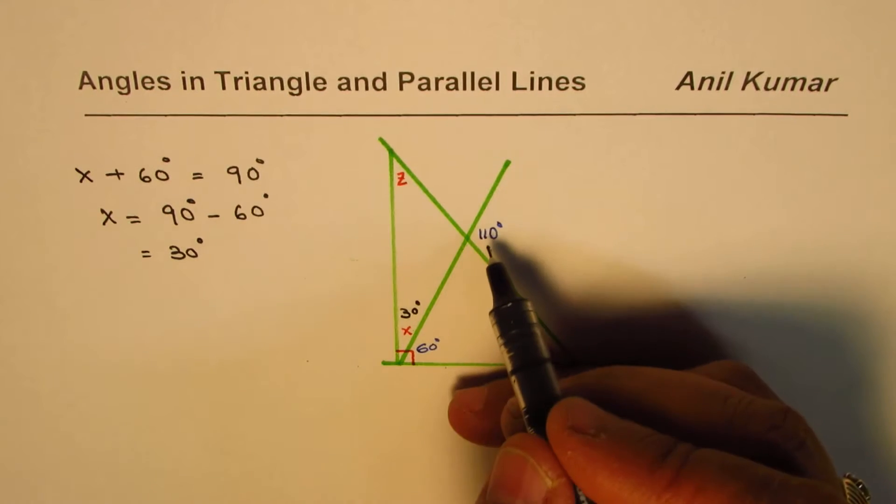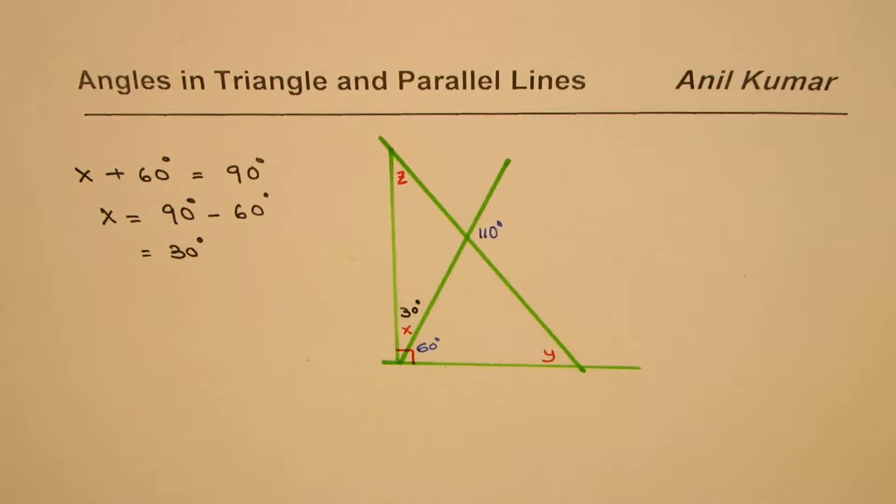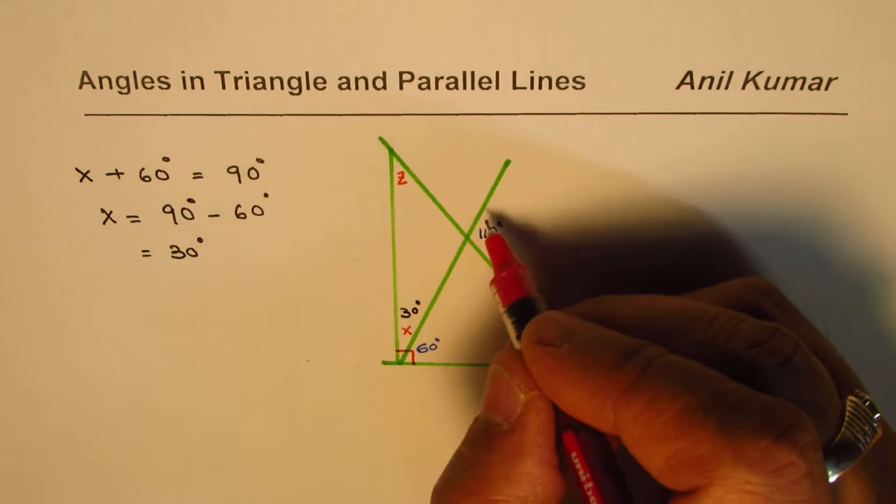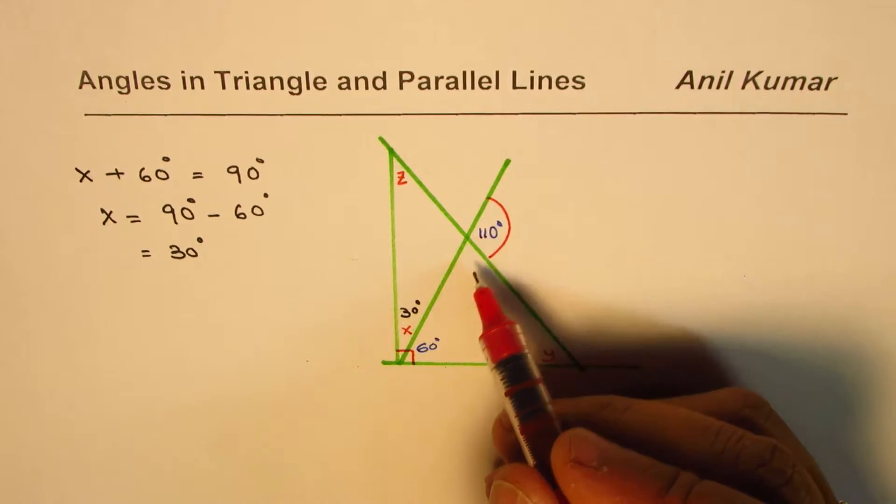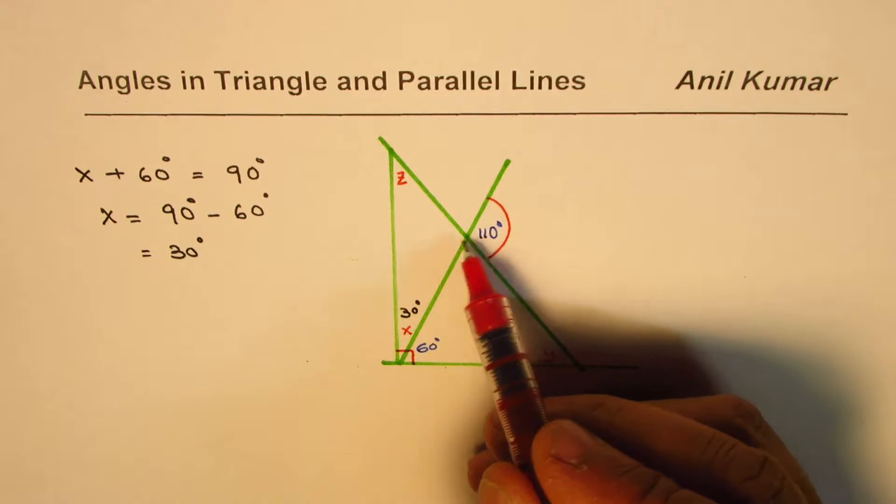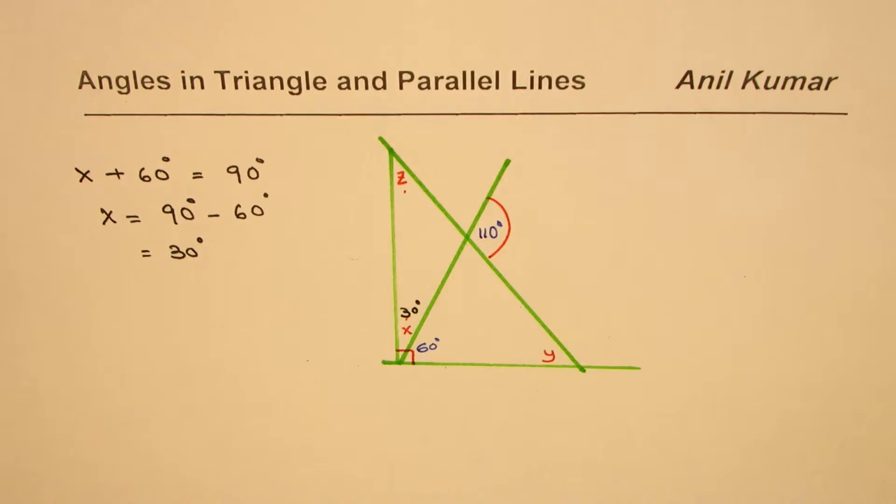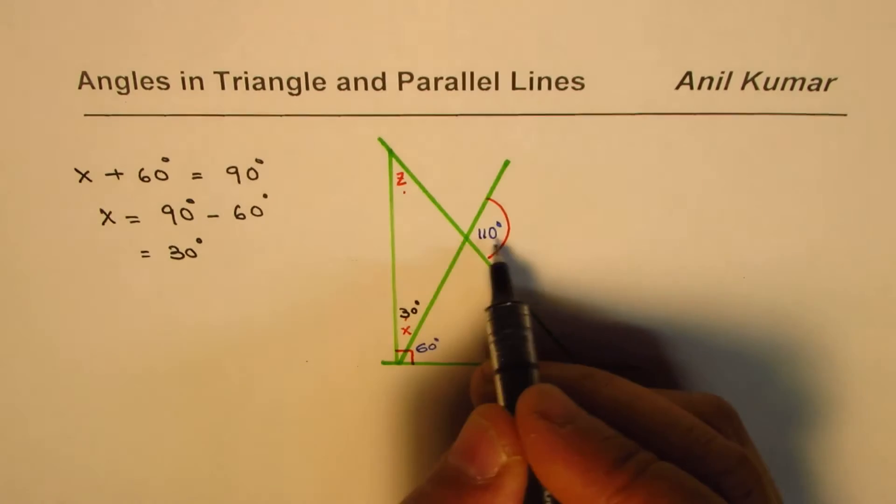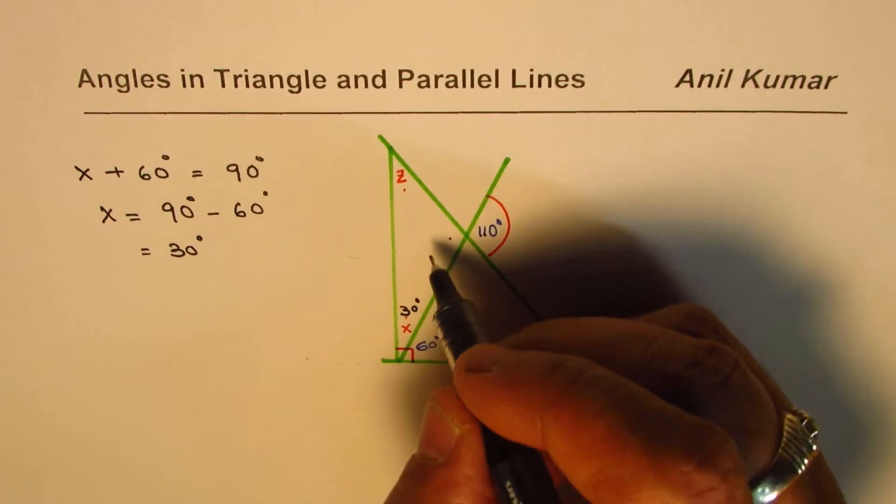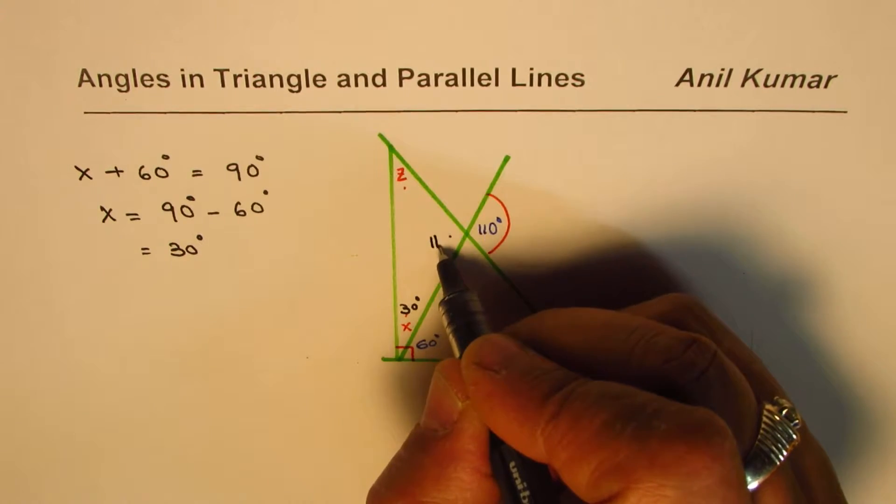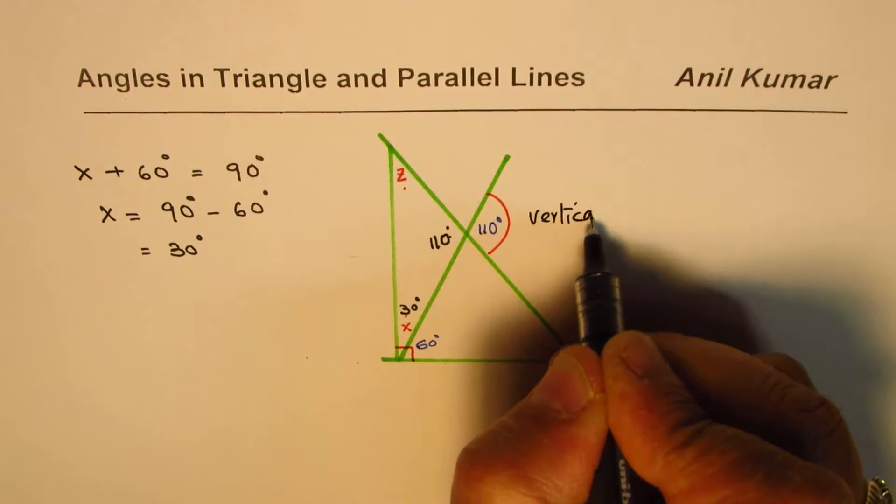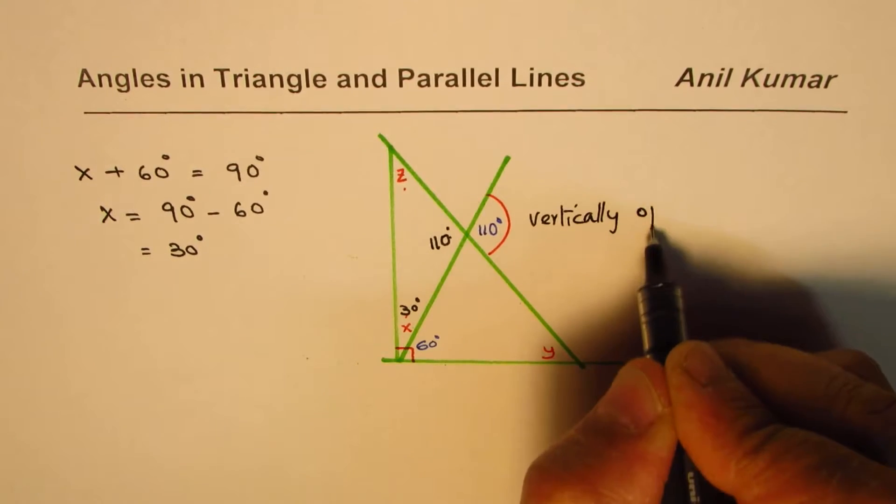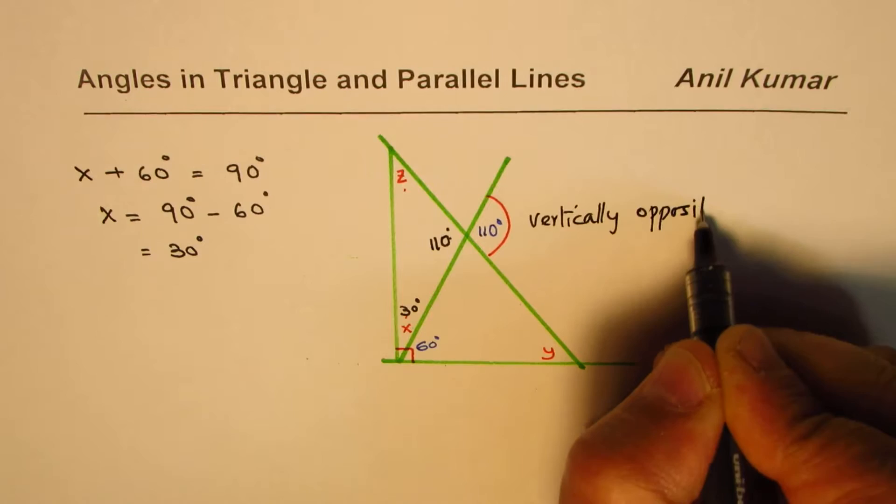Now, we have a given exterior angle of 110 degrees. How can we utilize this angle? Well, this exterior angle is the sum of these two angles. That's one way we could use it. The other way is, it is also vertically opposite to this angle. So that angle here will also be 110 degrees. These are vertically opposite angles. They are always equal.